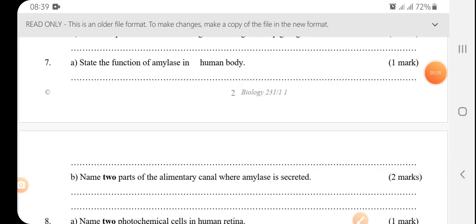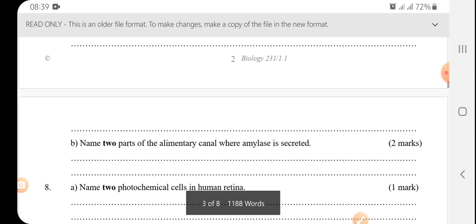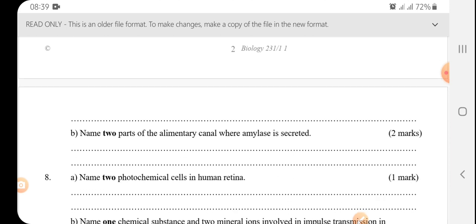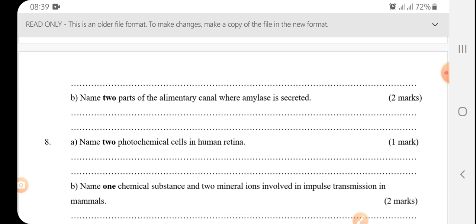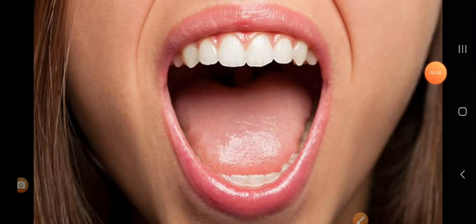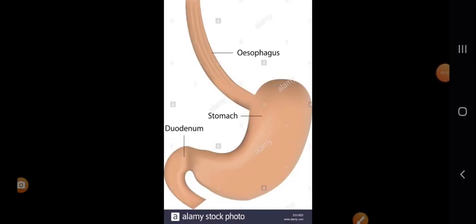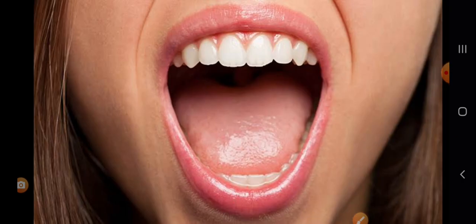State the function of amylase in the human body. So it digests starch to maltose. Examples of starch include ugali, rice, chapati, pasta, etc. Name two parts of the alimentary canal where amylase is secreted. So they include your mouth and the duodenum. So therefore, digestion of starch starts in the mouth.